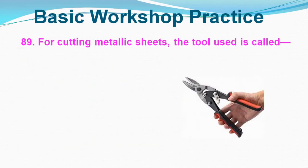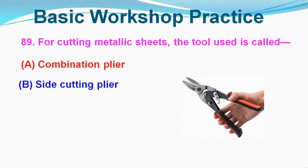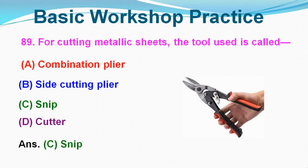Question No. 89: For cutting metallic sheets, the tool used is called which of the following? Option A: Combination plier, Option B: Side cutting plier, Option C: Snip, Option D: Cutter. Correct answer is Option C, Snip.